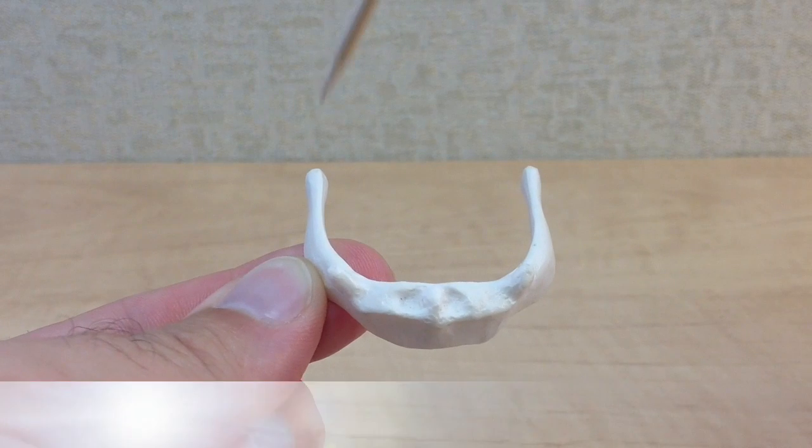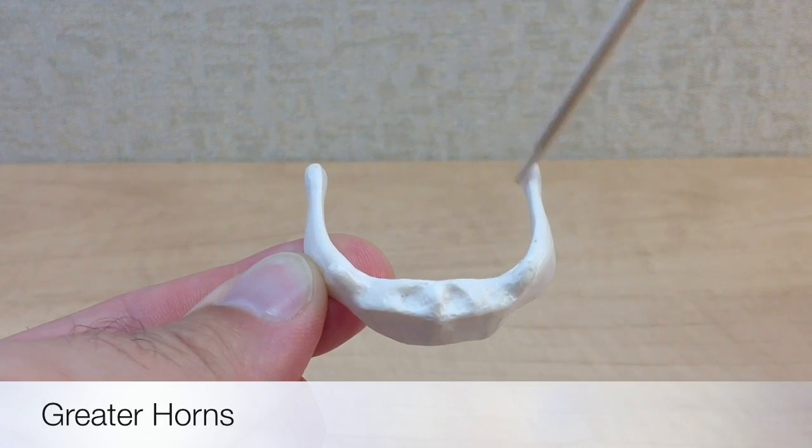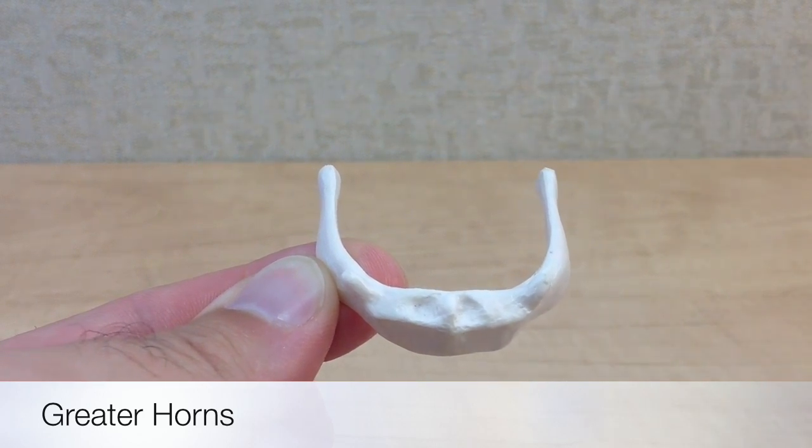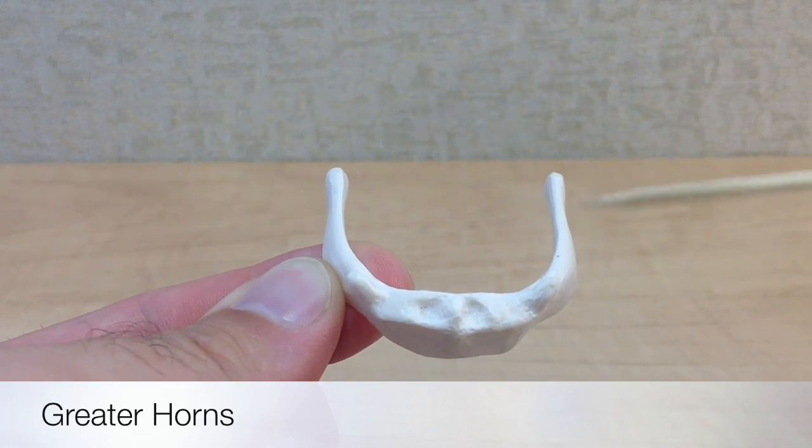The greater horns. These are the larger and longer paired horn-like projections that extend posteriorly from the body.